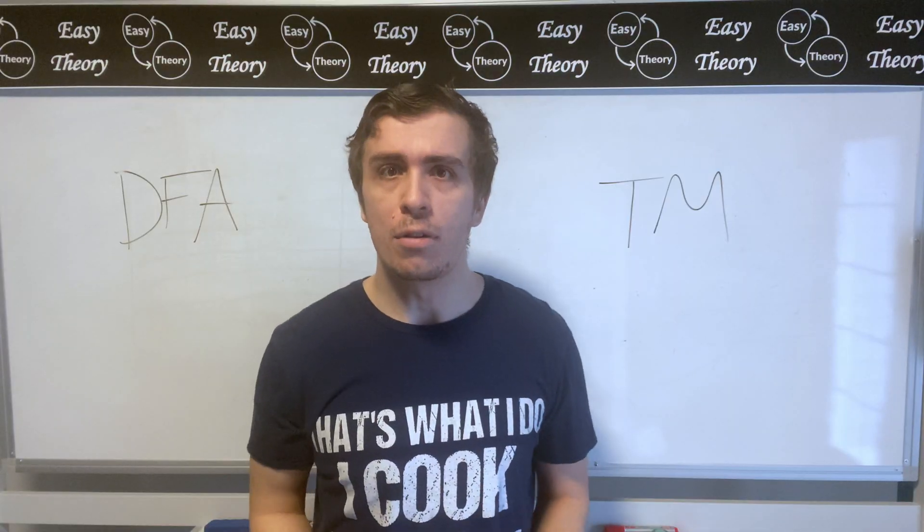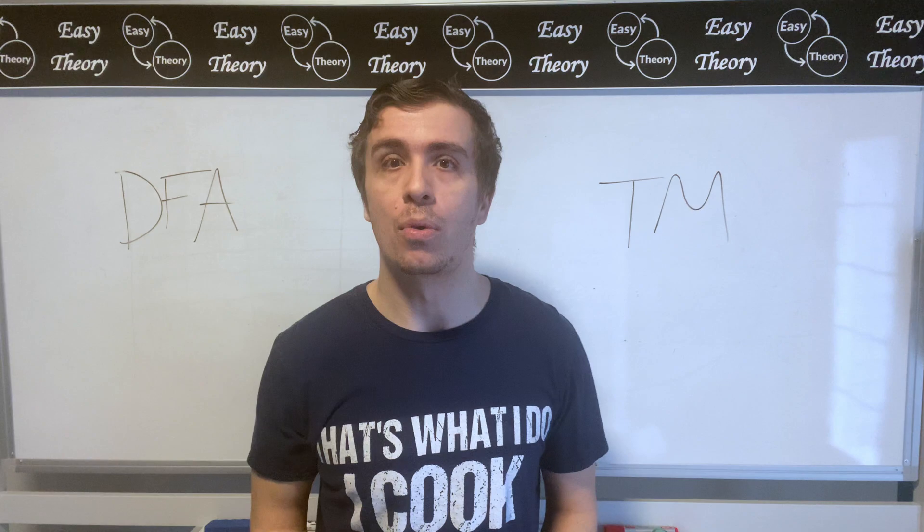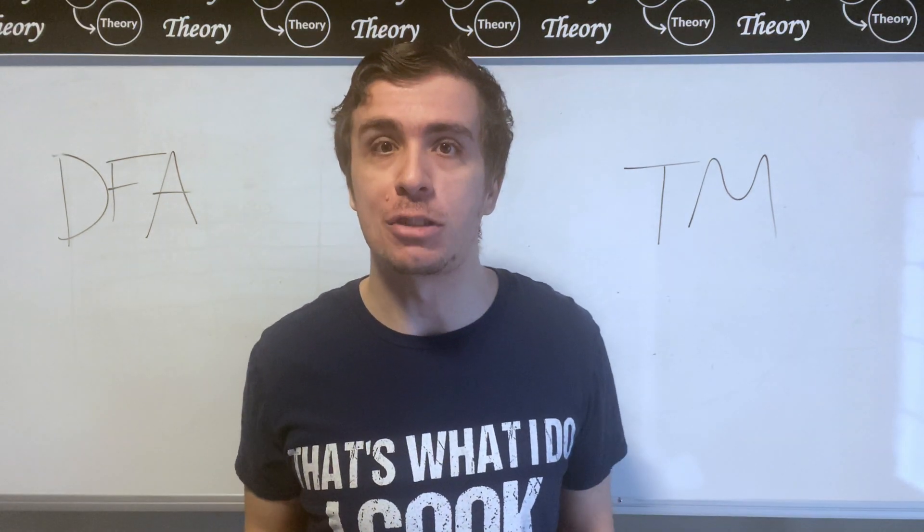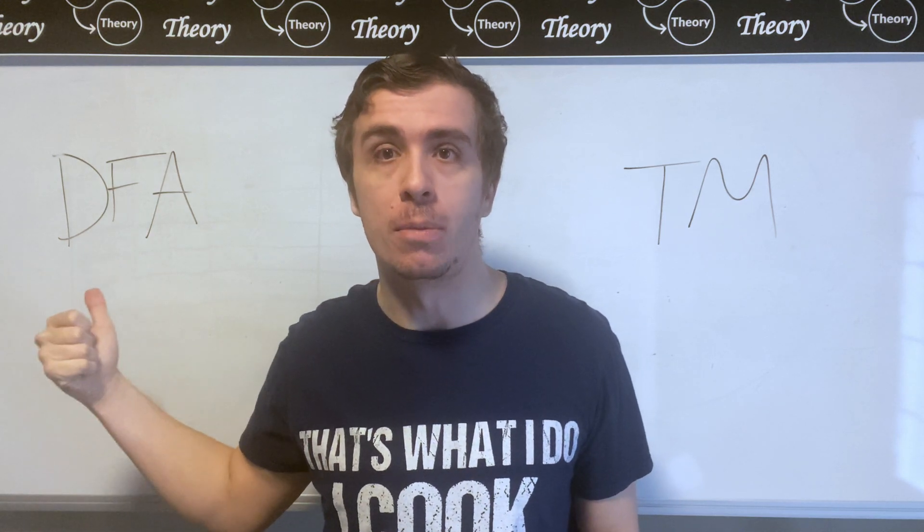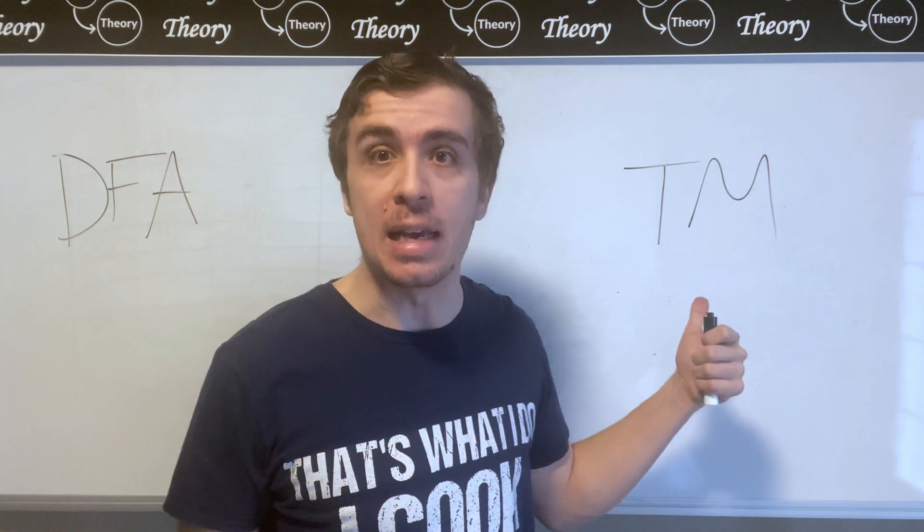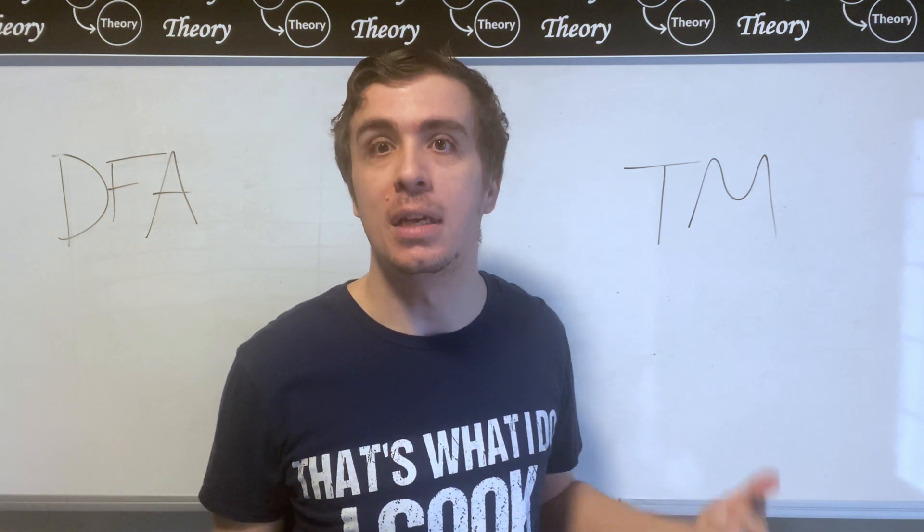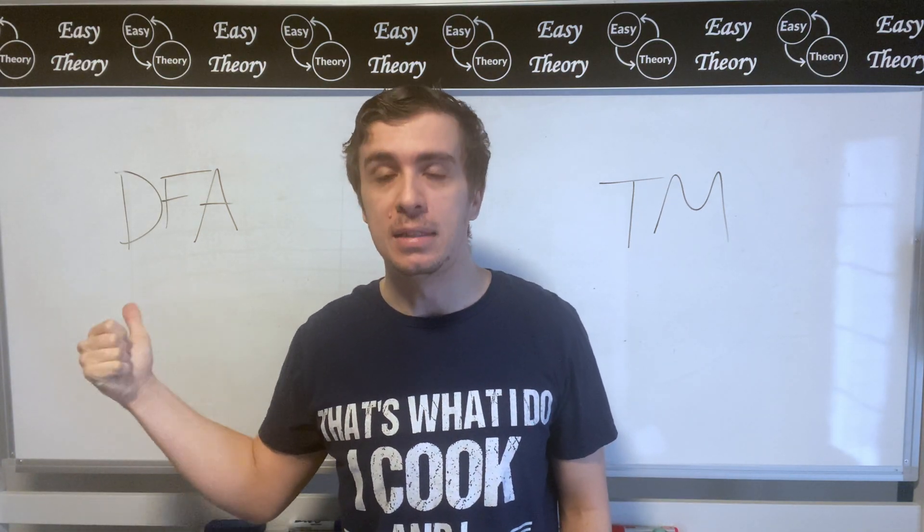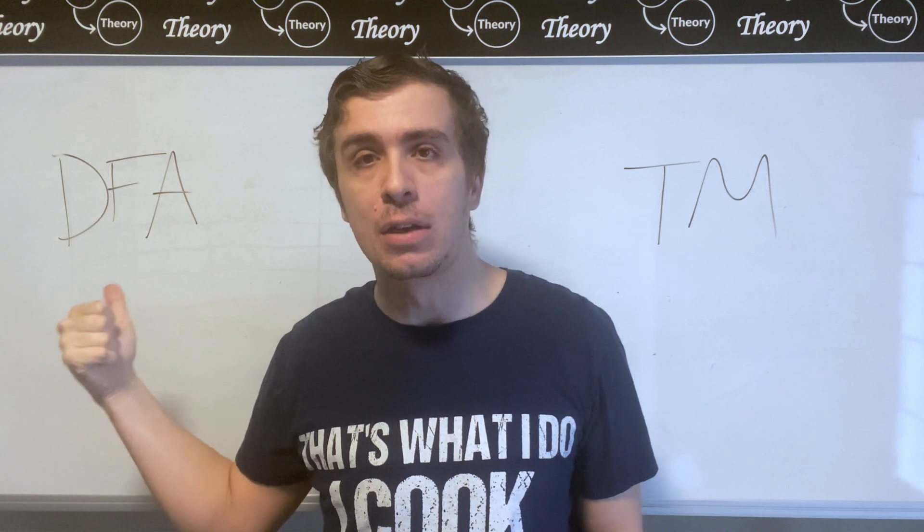That was easy. In theoretical computer science it's always important to understand the computational power of various models. In class we usually talk about things called deterministic finite automata and then later we talk about things called turing machines, and we discover that turing machines are far more powerful than DFAs because DFAs can only do a certain number of things while turing machines can do a lot more.